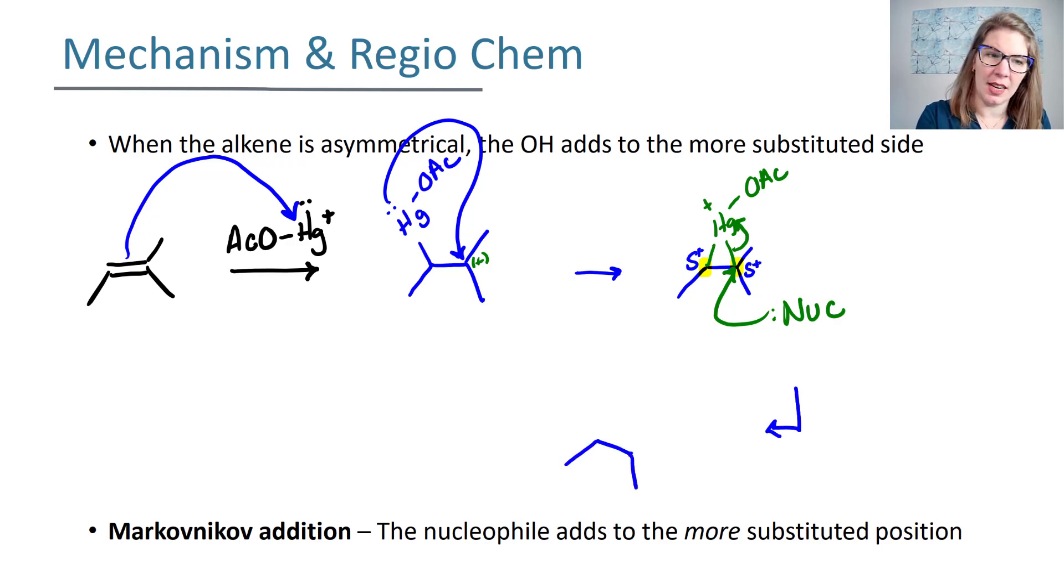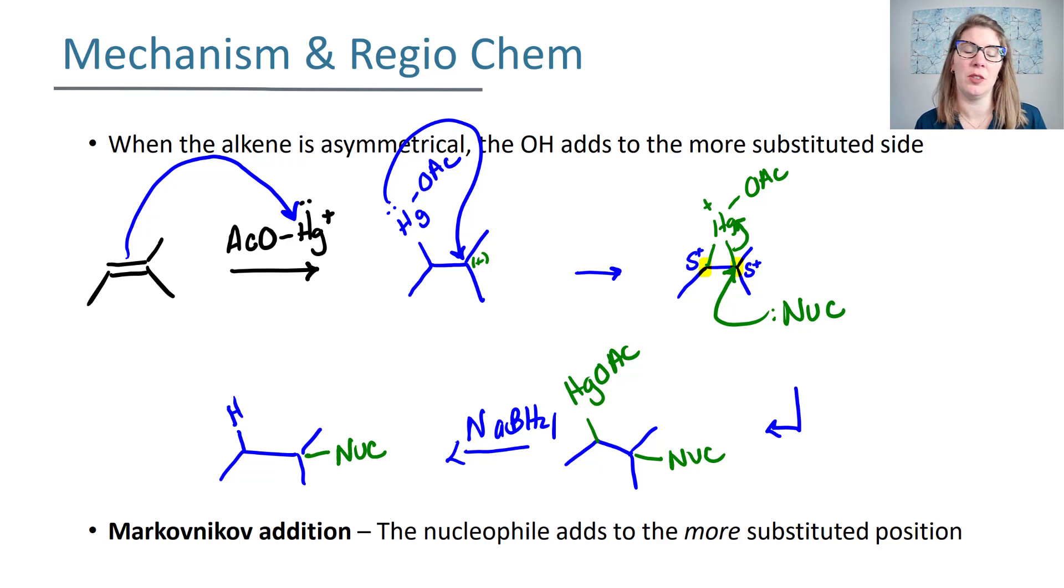Now what you have is a nucleophile that has added, and you still have the HgOAc. This is where that second step of adding sodium borohydride comes in. Your sodium borohydride is going to do the job of replacing the HgOAc with a hydrogen so that your final product has a hydrogen where the HgOAc used to be and your nucleophile at the more substituted side.